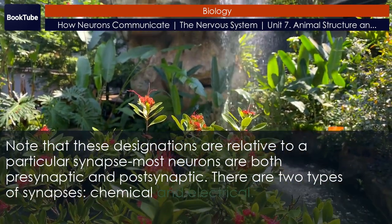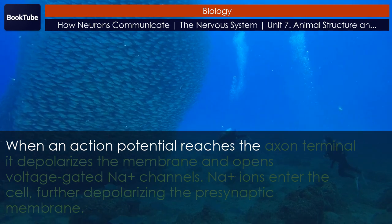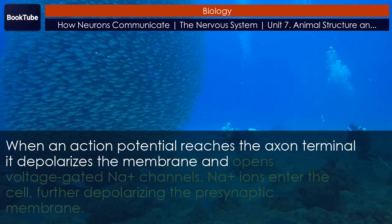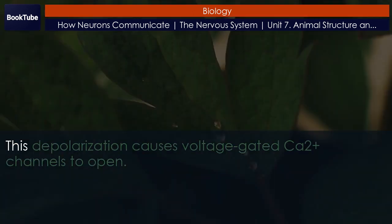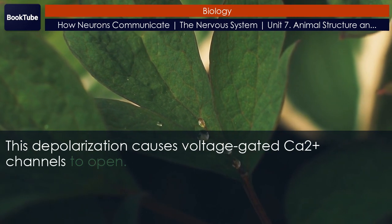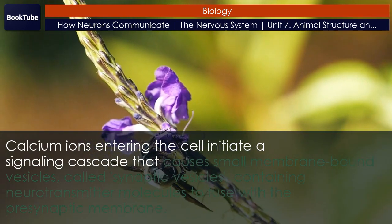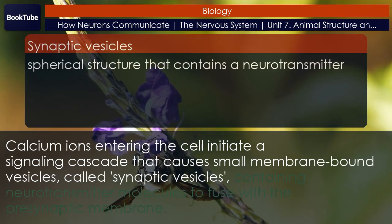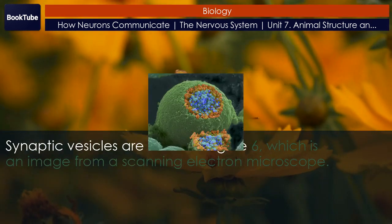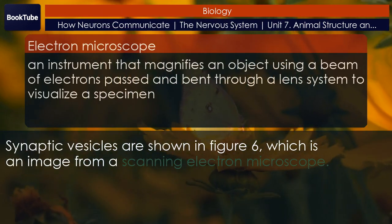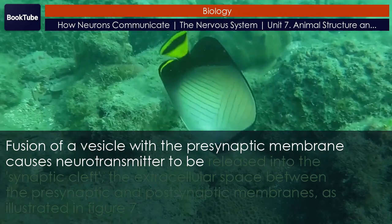There are two types of synapses: chemical and electrical. In a chemical synapse, when an action potential reaches the axon terminal it depolarizes the membrane and opens voltage-gated Na+ channels. Na+ ions enter the cell, further depolarizing the presynaptic membrane. This depolarization causes voltage-gated Ca2+ channels to open. Calcium ions entering the cell initiate a signaling cascade that causes small membrane-bound vesicles called synaptic vesicles containing neurotransmitter molecules to fuse with the presynaptic membrane. Synaptic vesicles are shown in Figure 6, which is an image from a scanning electron microscope.